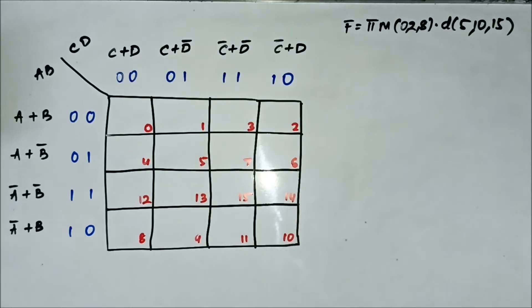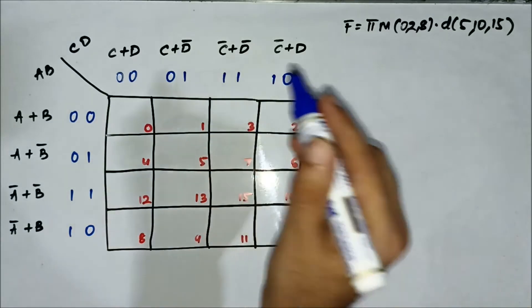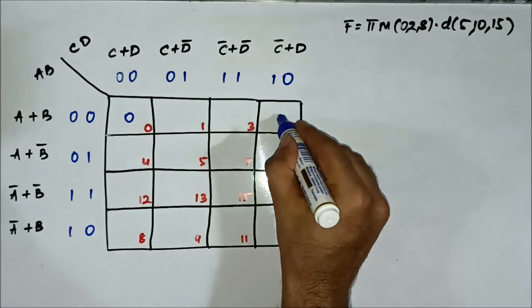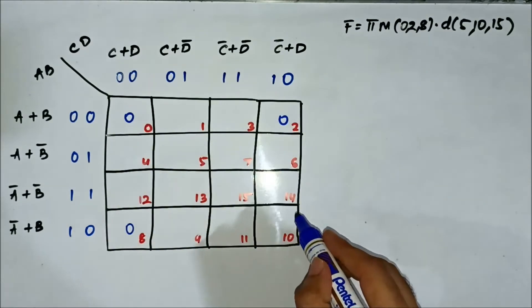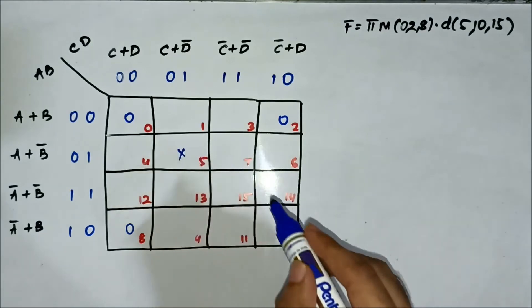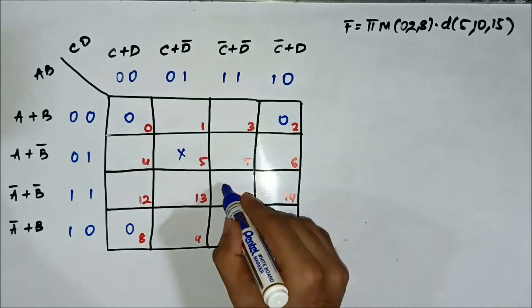The max term values are 0, 2, 8. The don't care values are 5, 10 and 15.